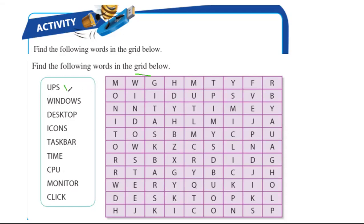Let's start with 'UPS' — the first letter is U. Where is the U? I found it here, so I can match UPS. Next, 'Windows' — the first letter is W. Find a W. I found it here, so I'm going to find all the letters and match it.